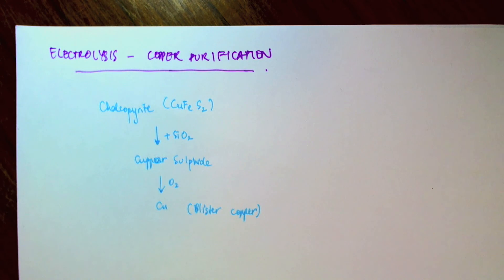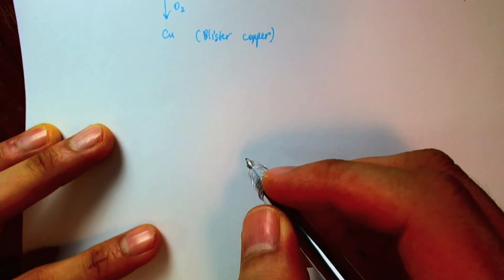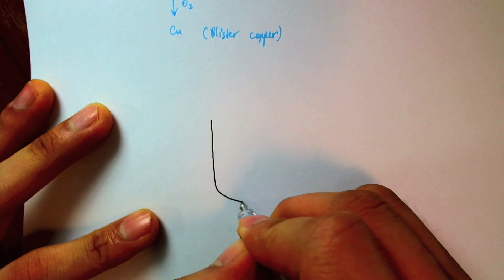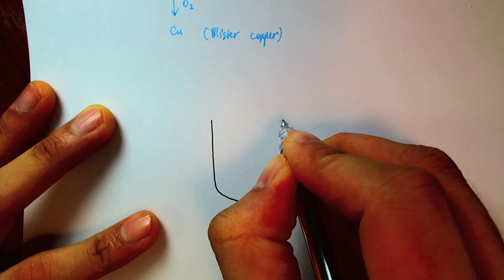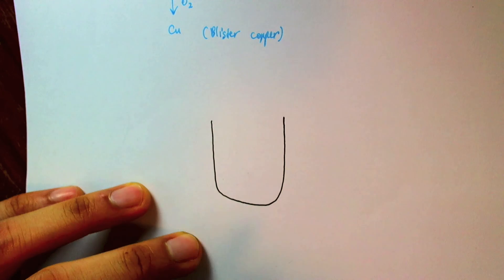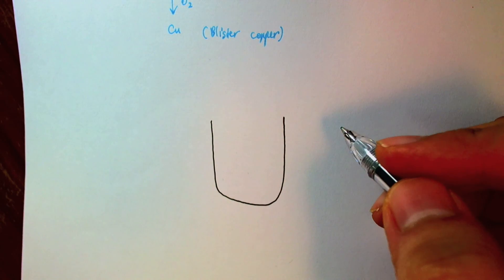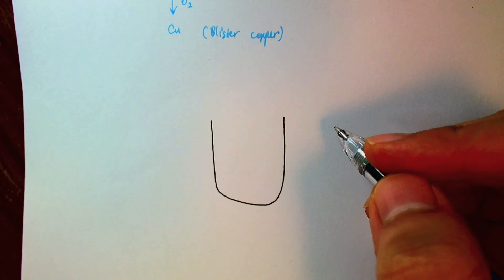So it turns out that electrolysis is a great way to purify copper. And we'll see why in a minute. So let's jump right into the process of purifying copper. So once again, we'll set up our beaker here. And in it, I'll put two electrodes. But this time, instead of using the inert carbon electrodes,